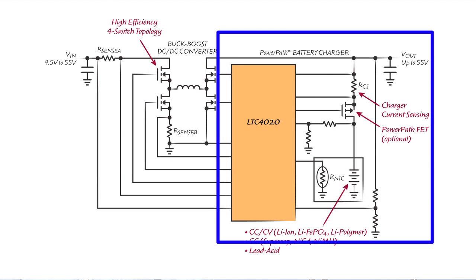The buck-boost converter employs a high-efficiency 4-switch topology and requires only a single inductor. The output of the buck-boost converter directly powers system loads while simultaneously providing charge power to the battery. Maximum charge current is adjusted and monitored via an external sense resistor.